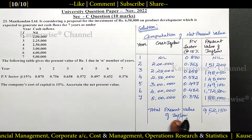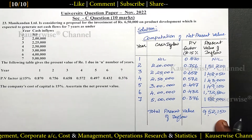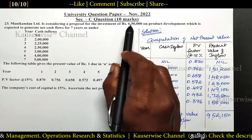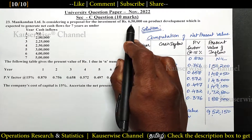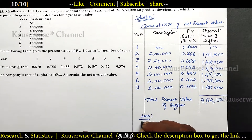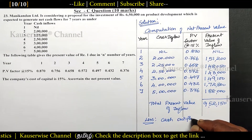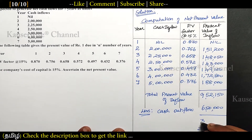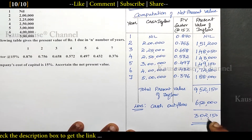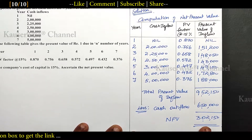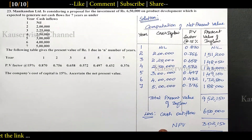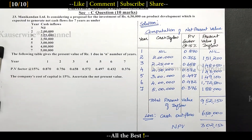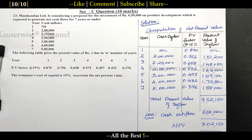After finding the total present value of inflow we need to compare it with cash outflow. Cash outflow means initial investment — as given in the problem, that is 6,50,000. Less cash outflow: 6,50,000. The difference is 3,02,150. This is called NPV — net present value. This is the way to find out net present value: after finding total present value of inflow, subtract the cash outflow in order to find out net present value.